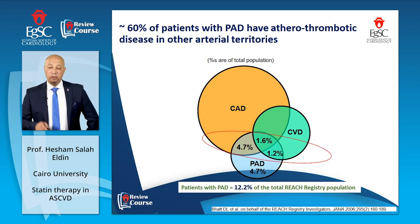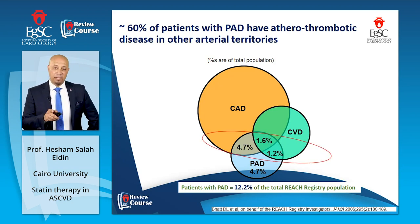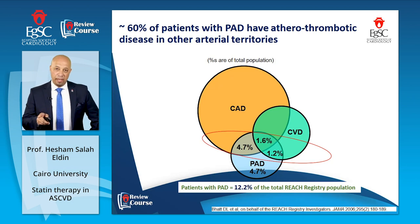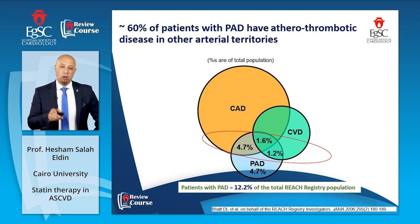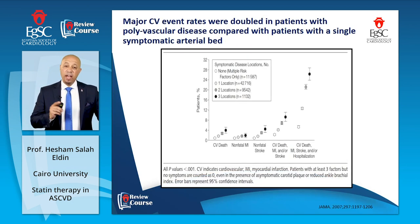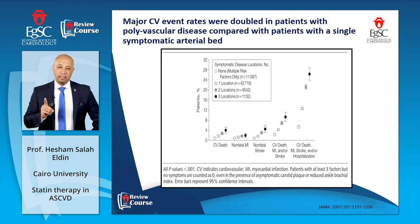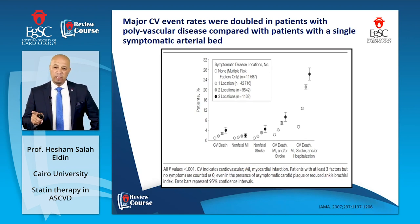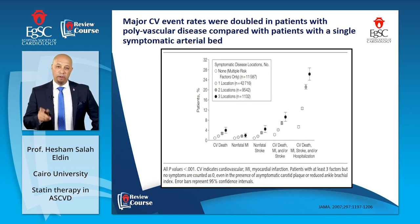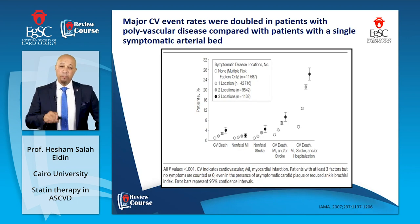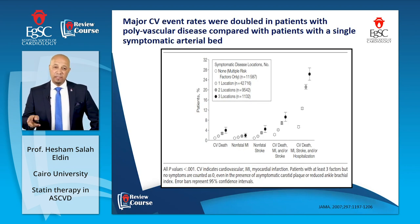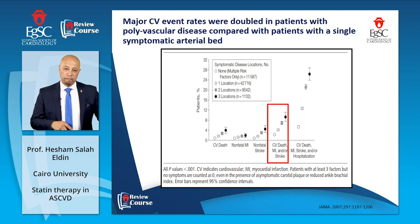So if you're having one vascular bed with disease, you should expect that other vascular beds may also be involved. If you have more than one vascular bed involved — polyvascular disease — you are definitely at even higher risk.